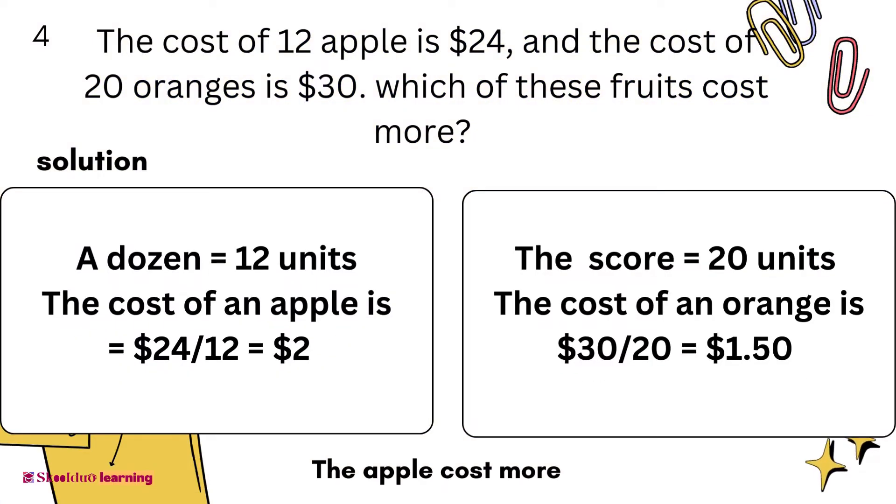Solution: The cost of 1 apple will be $24 divided by 12, which equals $2, while the cost of orange will be $30 divided by 20, which equals $1.50. Comparing the cost of 1 apple and the cost of 1 orange shows that apple, which costs $2, is more than an orange which costs $1.50. Therefore, the apple costs more than the orange.